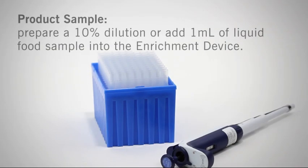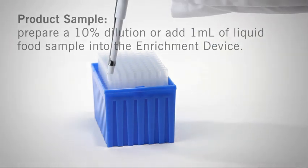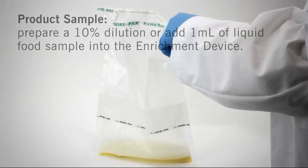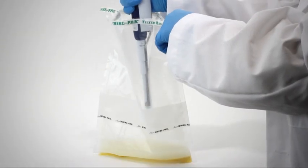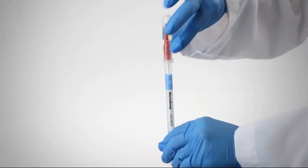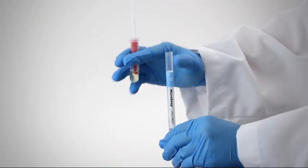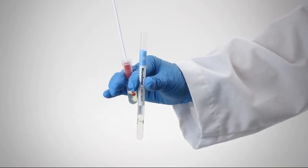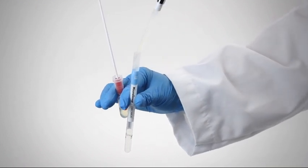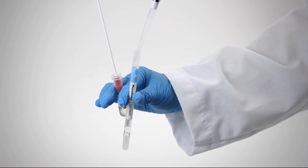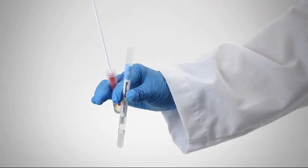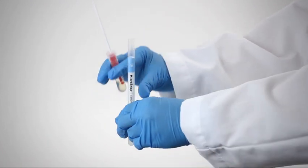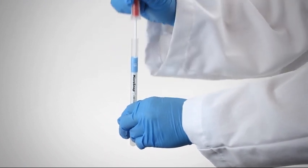For product samples, you may prepare a 10% dilution or add 1 milliliter of liquid food samples directly to the enrichment device. Replace the swab in the tube.